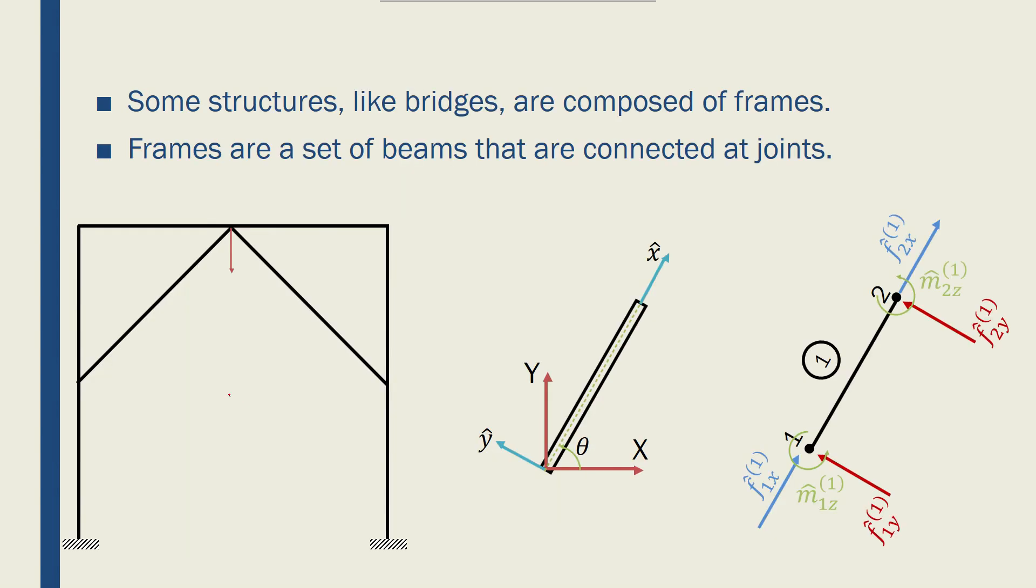However, most structures like bridges are composed of frames and frames are basically a bunch of beam elements that are connected to each other like that and they have their own local coordinate systems.